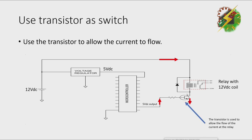In this circuit, the transistor is used to allow the flow of current at the relay. The resistor is used to limit the flow of current at the base to protect the transistor, and the diode in reverse bias for energy stored protection.